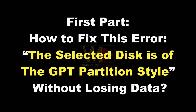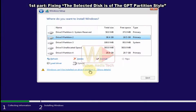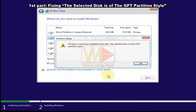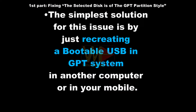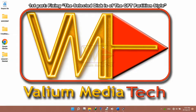First part: how to fix the error 'the selected disk is of the GPT partition style' without losing data. This error indicates that the internal disk in your computer has a GPT scheme while the bootable USB has an MBR disk scheme. The simplest solution is by just recreating a bootable USB with a GPT system in another computer or on your mobile.